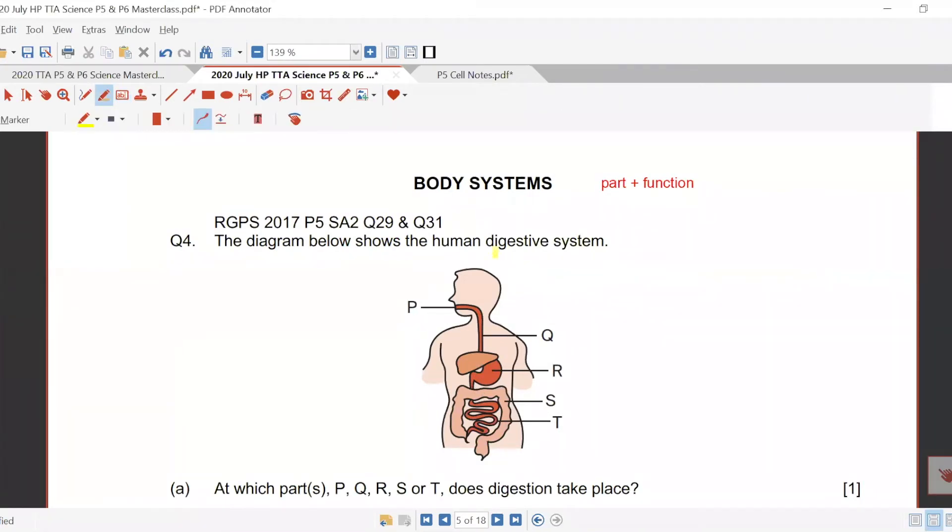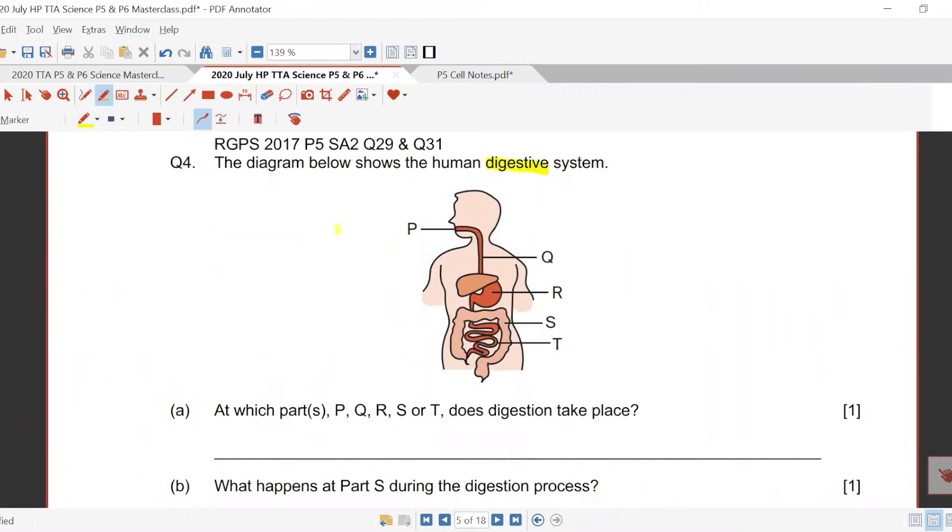But of course, for circulatory system, same thing. You must know what does each part do. Digestive system, we got all these parts, P Q R F T. Which part of digestion takes place?